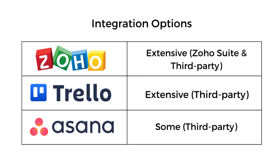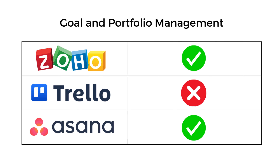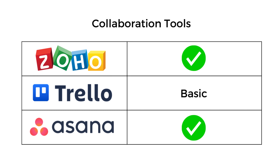Regarding integration options, Zoho offers extensive integrations with the Zoho suite and third-party developer apps; Trello also offers extensive third-party integrations; and Asana has slightly fewer integration capabilities. Both Zoho and Asana offer goal and portfolio management, while Trello lacks this feature. For collaboration tools, Trello has the most basic set compared to Zoho and Asana. Overall, Zoho Projects offers the most comprehensive feature set, Asana is a more pro-level tool, and Trello is the most simplified.